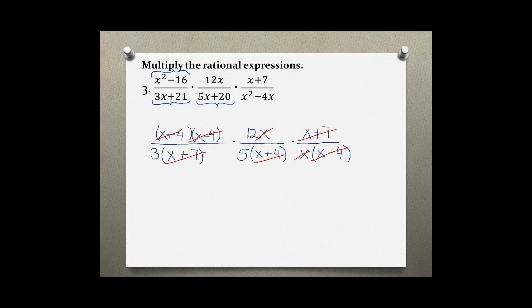And also 3 and 12 share a common factor of 3. So 3 goes into 12 four times, and 3 goes into 3 one time. Now I simplified everything I could, and I am going to rewrite the leftover numbers after multiplying them together.